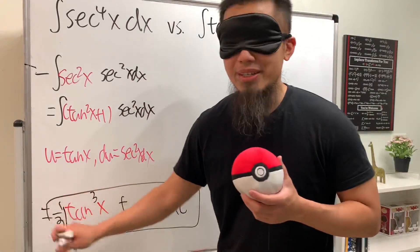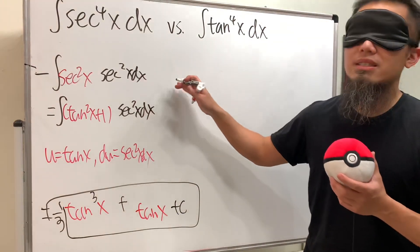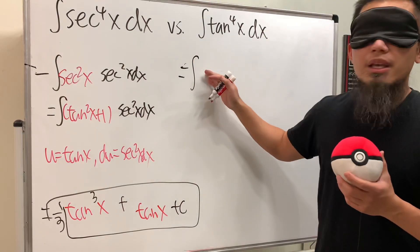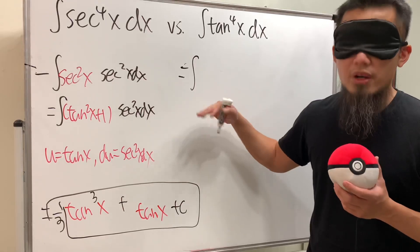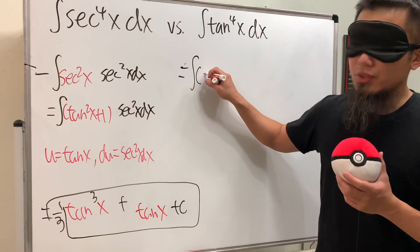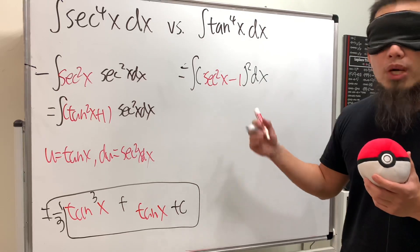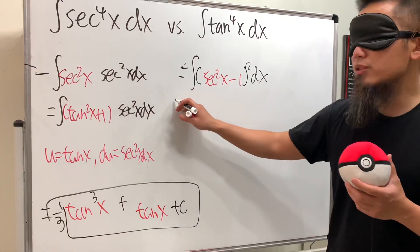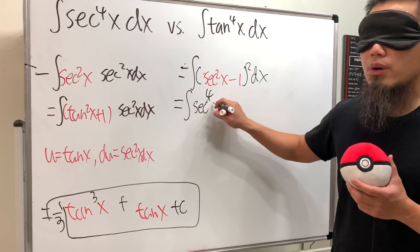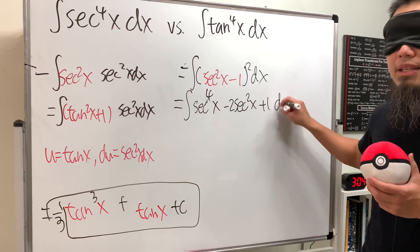Now for the integral of tangent to the fourth power x. We write tangent to the fourth as tangent squared, squared. Then we substitute the inside: tangent squared x equals secant squared x minus 1, and square that dx. Multiplying out gives us the integral of secant to the fourth x minus 2 secant squared x plus 1 dx.